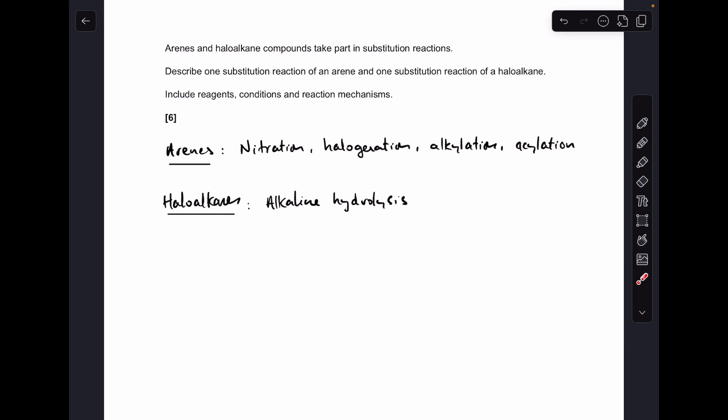For the purpose of the video, I'm just going to do the nitration of benzene because obviously there's lots of different aromatic compounds we could nitrate, so I'm just going to keep it really simple. For the haloalkanes, there's only one option and that's the alkaline hydrolysis. So I'm going to look at the alkaline hydrolysis of chloroethane.